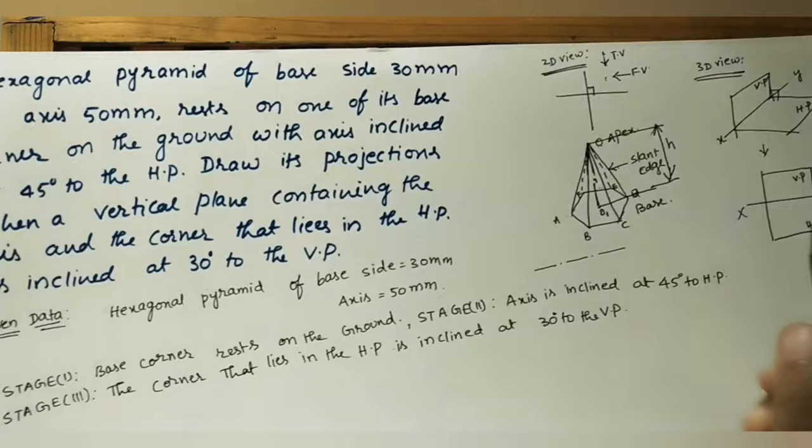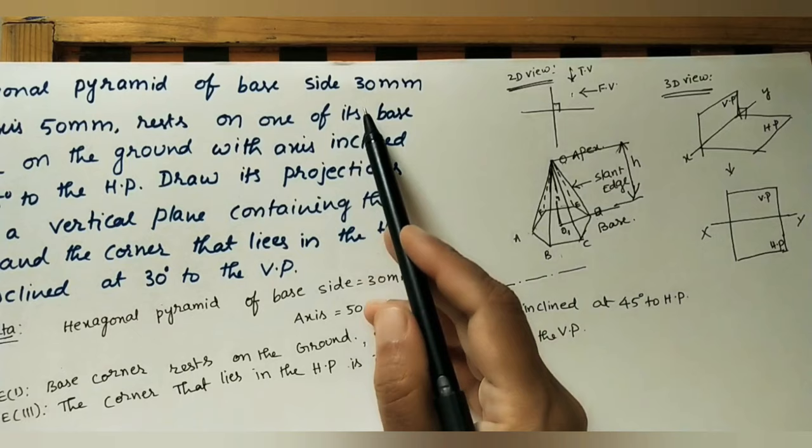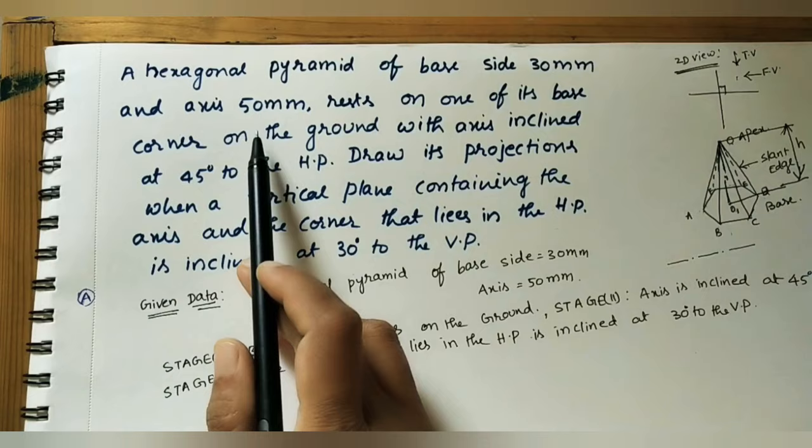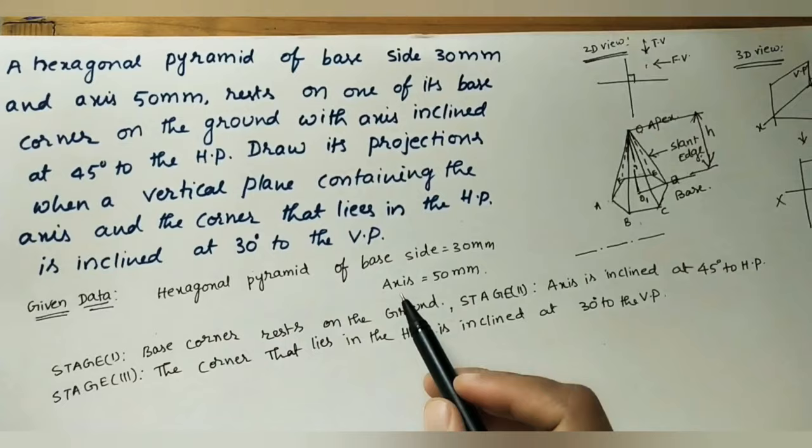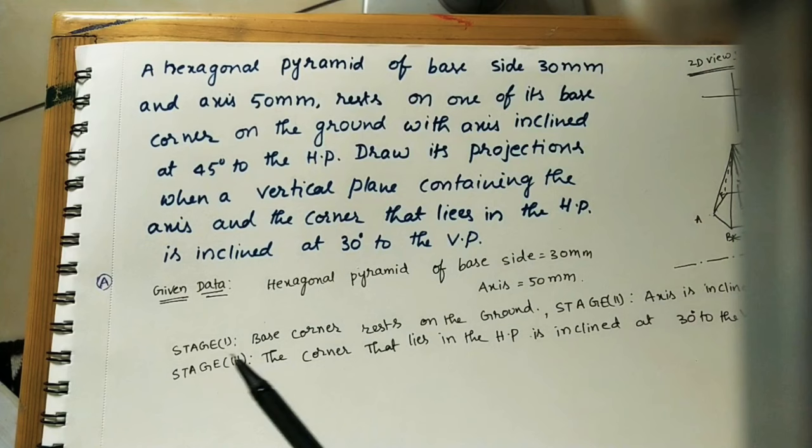The base side is 30 mm, meaning all sides are 3 cm. The axis is 50 mm, which is the height of the pyramid — 5 cm. Three conditions are given here, and those conditions are written as stage 1, stage 2, and stage 3.